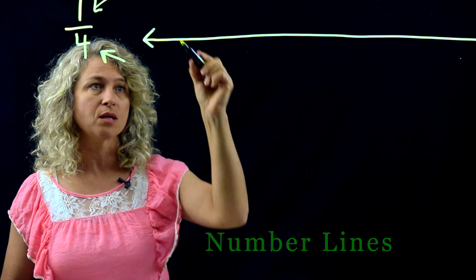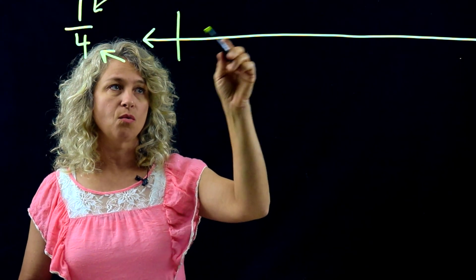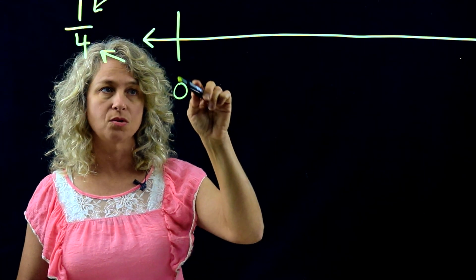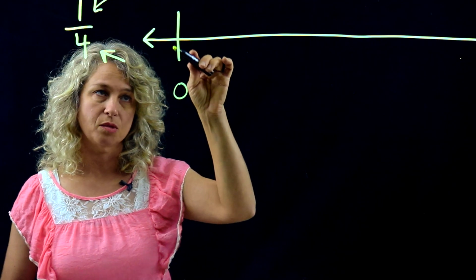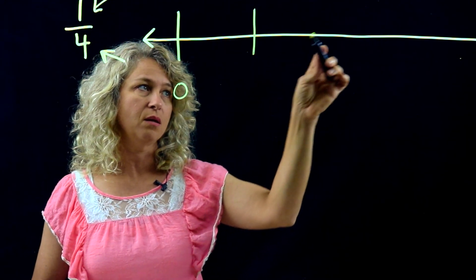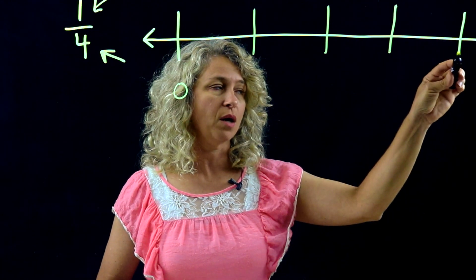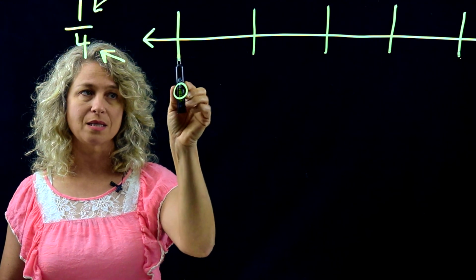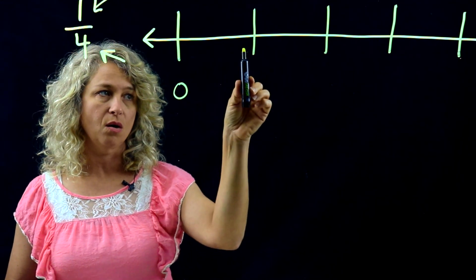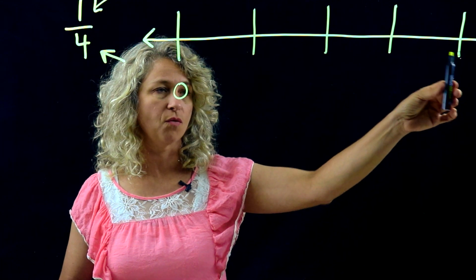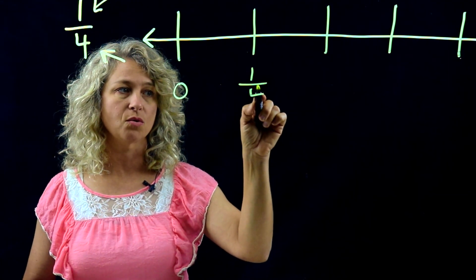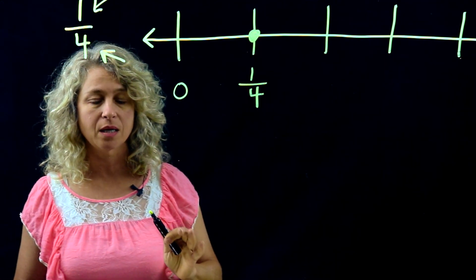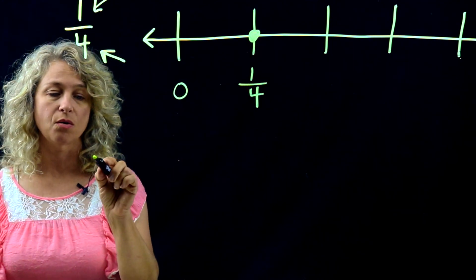When you start drawing your tick marks, you want four equal spaces. Always start at zero — do not count this as one equal space. So: zero, one, two, three, four equal spaces. Label them: zero, one fourth, two fourths, three fourths, four fourths. Here is your one fourth space, and this is where your point would be placed for 1/4.